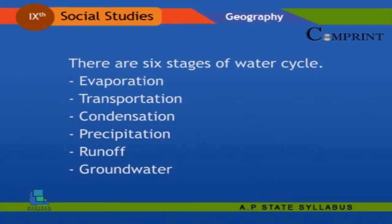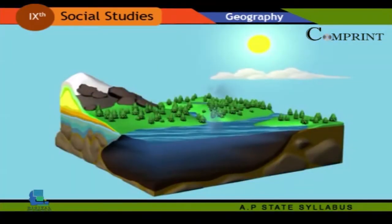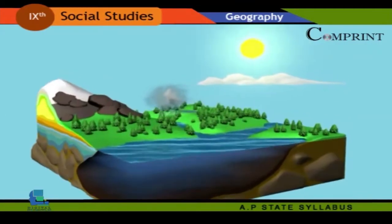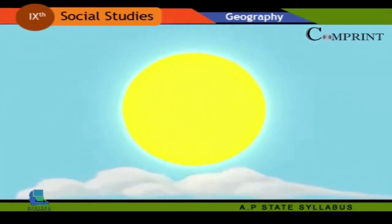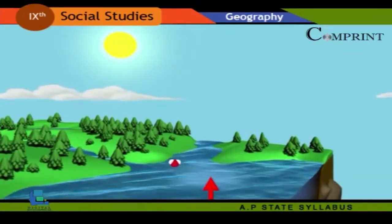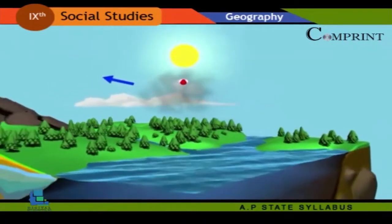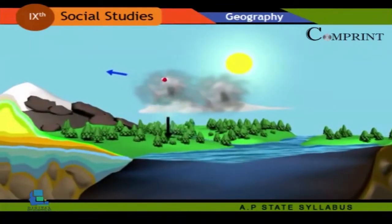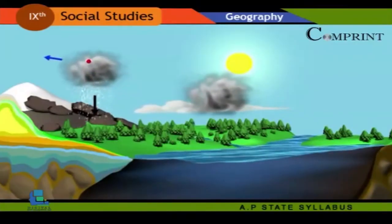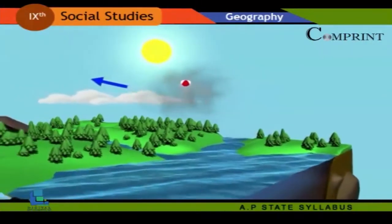Evaporation: Water is transferred from the surface to the atmosphere through evaporation — the process by which water changes from a liquid to a gas. The Sun's heat provides energy to evaporate water from the Earth's surface. Land, lakes, rivers, and oceans send up a steady stream of water vapor.